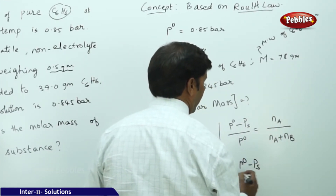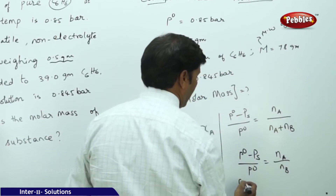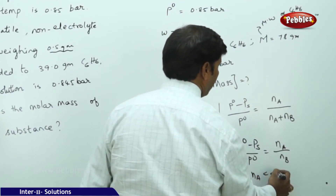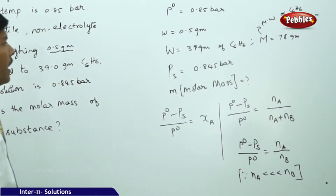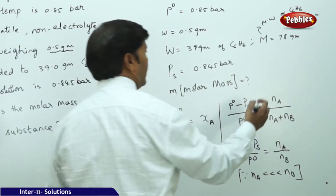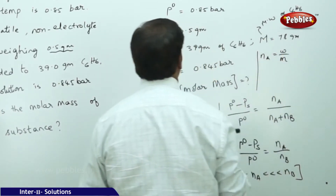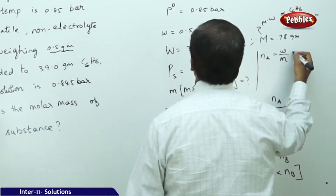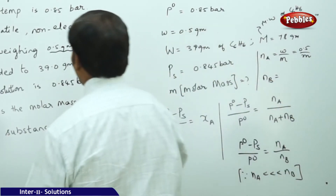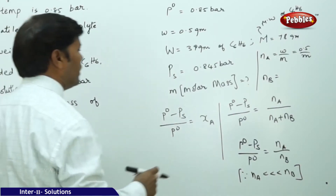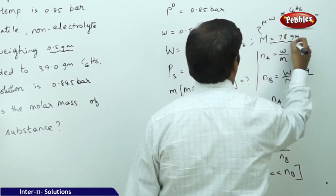So we simplify to (P₀ - PS) / P₀ = NA / NB, since the number of moles of solute is very small compared to moles of solvent. We calculate NA = w / m = 0.5 / m, and NB = W / M = 39 / 78 = 1/2.